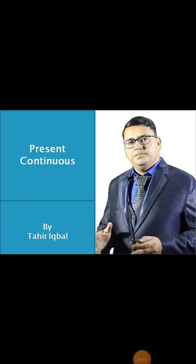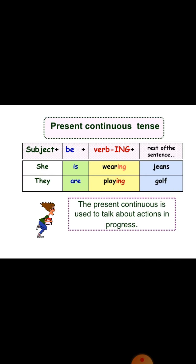Welcome to English with Sir Tahir. Today we are going to do present continuous, or present progressive. The present continuous is used to talk about action in progress. In easy words, we normally use present continuous when we are in the middle of an action in the present.